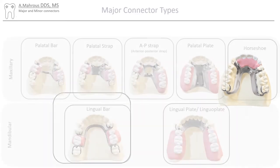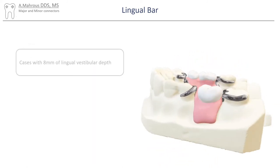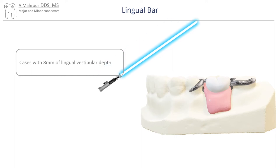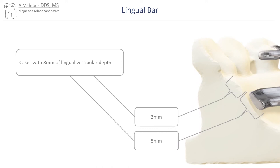Now let's move on to the mandibular major connectors, starting with the lingual bar. Lingual bars need to be about 5mm in thickness for adequate strength and are indicated in cases with about 8mm of vestibular depth. To understand why, we'll take a closer look at the anatomy of a lingual bar. For educational purposes, let's slice that RPD in half. From that view, in order to have enough thickness for the major connector and enough space between it and the free gingival margin, you need 5mm and 3mm respectively, which adds up to about 8mm of vestibular depth.